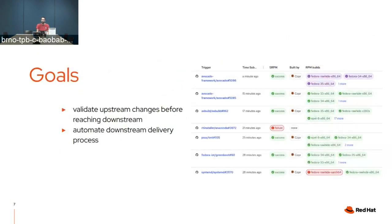A little more about our goals: we're trying to validate upstream changes as they're being worked on, meaning to provide feedback back to contributors right away from the downstream Linux distributions — Fedora Linux, CentOS Stream, or Red Hat Enterprise Linux. This is really important because when code is developed upstream and then released, it can take weeks or even months before that release reaches downstream. When a regression is found at that point, it's already too late and costly to fix. When we provide feedback right away, the contributor still has the code in mind and can fix the issue immediately.